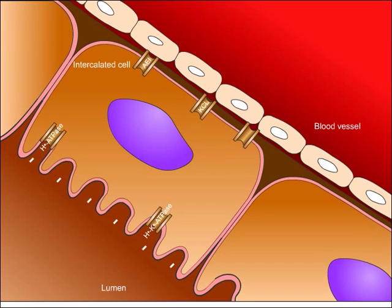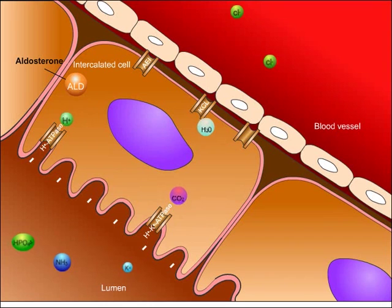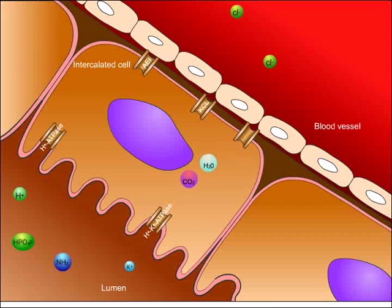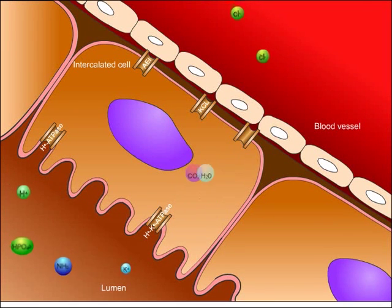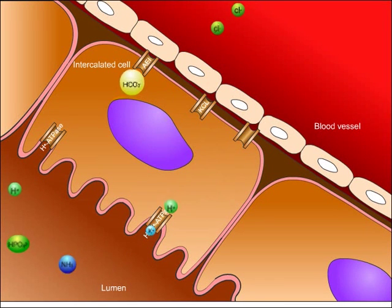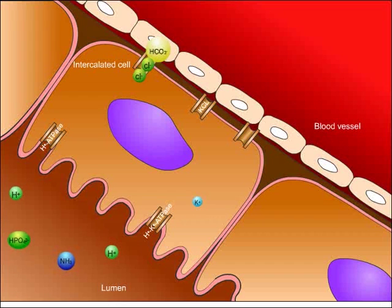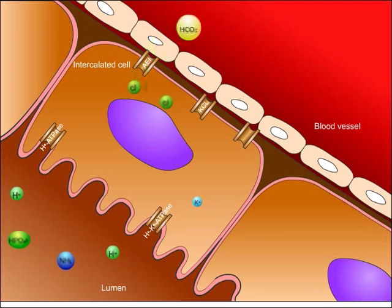Now let's look at normal ion transport within the intercalated cells of the collecting duct. Inside intercalated cells, aldosterone stimulates hydrogen ATPase which, along with the negative charge in the collecting duct lumen, causes hydrogen ions to exit intercalated cells into the lumen. Carbonic anhydrase 2 binds water and carbon dioxide to form carbonic acid, which breaks down into hydrogen and bicarbonate. The hydrogen exits through the hydrogen-potassium ATPase in exchange for potassium. The newly formed bicarbonate will be reabsorbed into the blood in exchange for chloride by way of a bicarbonate-chloride, or anion exchanger, channel.